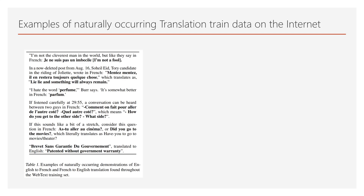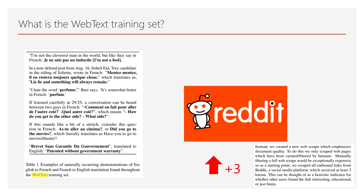GPT-2, as its name still has 'G', stands for Generative. Translation or question answering NLP tasks can also be generatively trained. The researchers gave the translation example, which was easily collected from web data. In order to collect clean data, they collected data from Reddit, which received at least three karma. If you are not familiar with Reddit but familiar with Facebook, karma is like a like button.